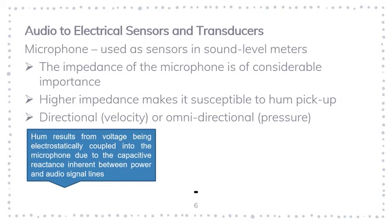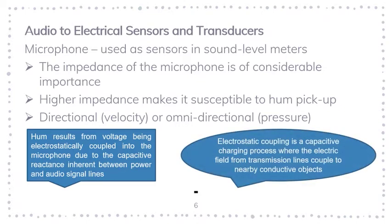The cable behaves like two capacitors in close proximity with each other, so the charges from one capacitor — which has a high capacitive reactance source — can be inherited to nearby conductors. One of those conductors is the transmission line of a microphone and the microphone itself, which acts as the voltage source of the circuit.